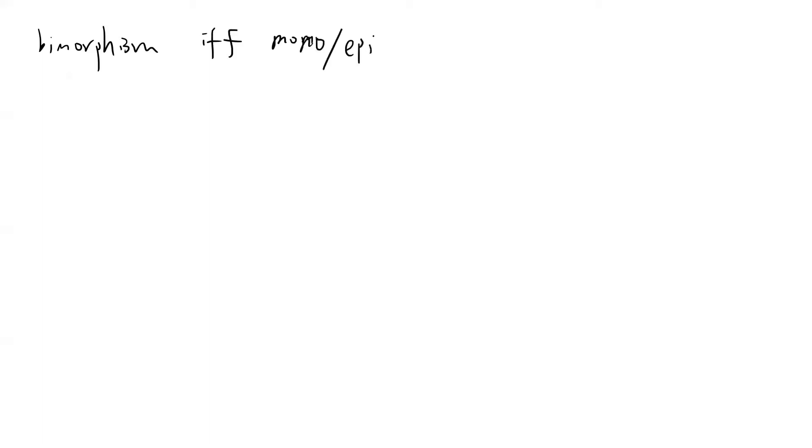This is indeed trivial. Also, a biomorphism is defined as a morphism that is both a monomorphism and an epimorphism — if it is both mono and epi, then it is called a biomorphism.